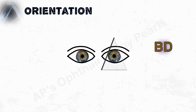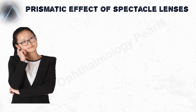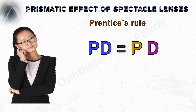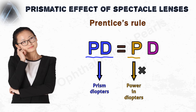Even regular spectacle lenses can have a prismatic effect when viewed through any point other than the optical center, the amount of which can be determined by Prentice's rule, which can be remembered easily by the equation P = DF. The prismatic effect at any point on the surface of a lens in prism diopters is equal to the power of the lens in diopters multiplied by the distance of the point from the optical center in centimeters.